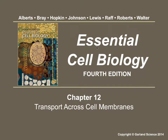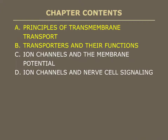Welcome students to another video in the essential cell biology series. This is chapter 12 part A, which deals with transport of material across cell membranes. Students should recall that different membranes from different organisms may perform differently and have different properties when it comes to transport. The chapter is divided into four parts; parts A and B will be covered in this video, and parts C and D in the next. Students are expected to comprehend general principles by which chemistry can cross membranes, and to concentrate on transporters and how they function.